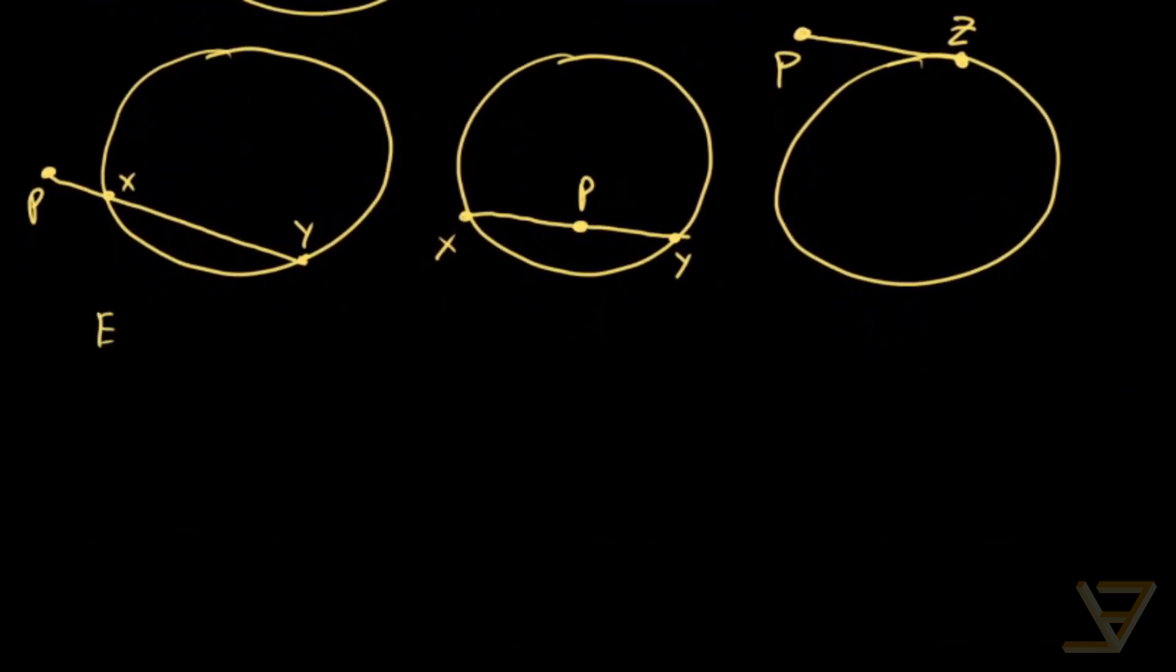So here we have an exterior point and a secant. Here we have an interior point and a chord. And here we have an exterior point and a tangent.